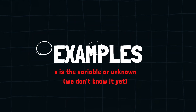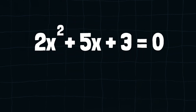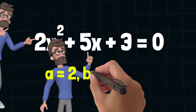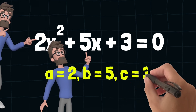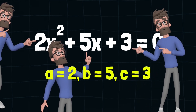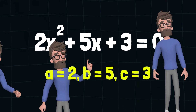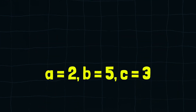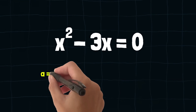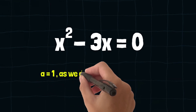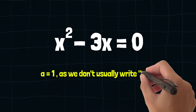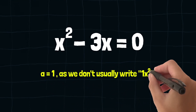Here are some examples. In this one, a is 2, b is equal to 5, and c is 3. Another example is a little more tricky. Can you see the a? Well, a is equal to 1, as we don't usually write 1x squared.